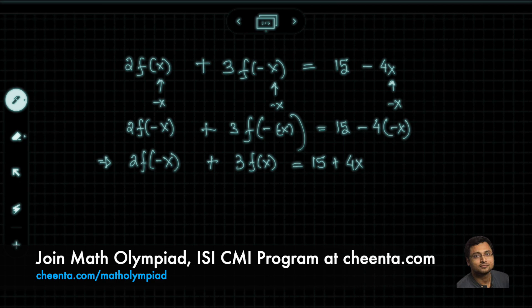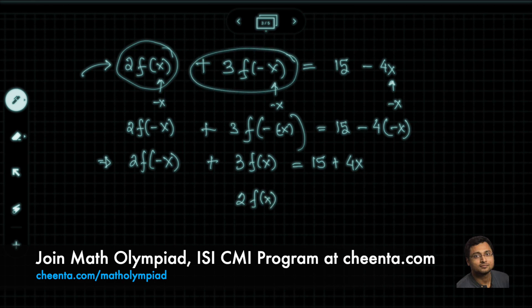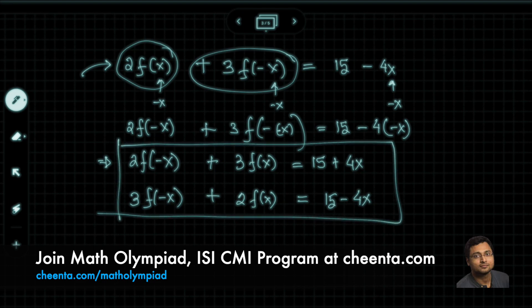Of course, we also have the original equation, which is 2 times f(x). So I'll write f(x) below f(x), 3 times f(-x), 3 times f(-x) is equal to 15 minus 4x. So you have a sort of simultaneous equation situation. It's now very simple. You multiply the first equation by 3 and you multiply the second equation by negative 2, and you solve for f(x).